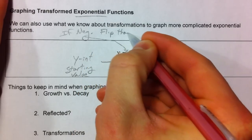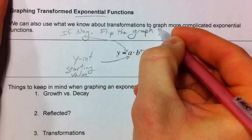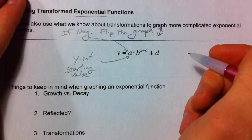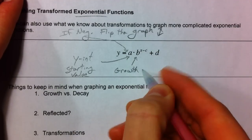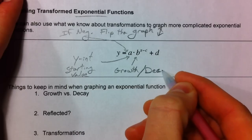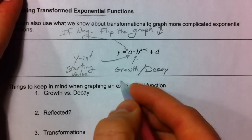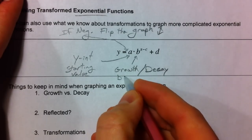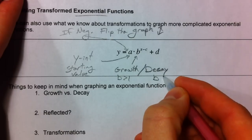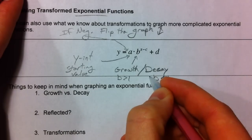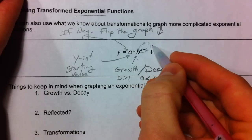The 'b' value tells you whether it's growth or decay — very important for knowing whether the graph is going up or coming down. If it's growth, 'b' is bigger than one, getting bigger every time you multiply by it. If it's decay, 'b' is less than one and bigger than zero.